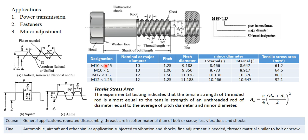There are two types of threads: coarse thread and fine thread. In the designation, if the second digit after the multiplication sign is present, it indicates a fine thread. If there is no such digit — as in M10 or M12 — then it is a coarse thread. The general application of coarse thread is for standard use, while fine threads are used for precision applications where vibration and shocks are likely.